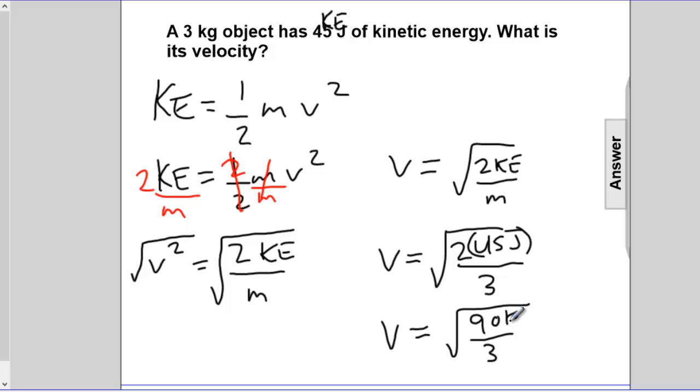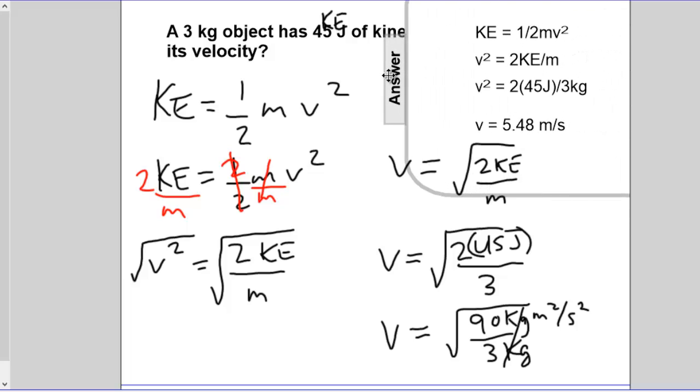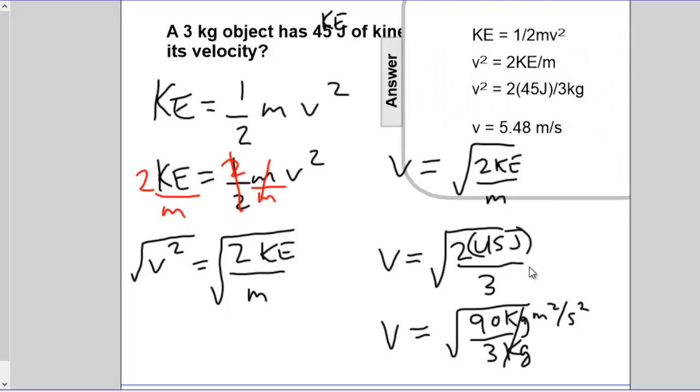Joules are kg meters squared per second squared, divided by 3 kgs. Kgs will cancel. And we get 90 divided by 3, which is 30. So it's the square root of 30 meters squared per second squared, or meters per second. We'll reveal the answer. And the value is 5.48 meters per second.